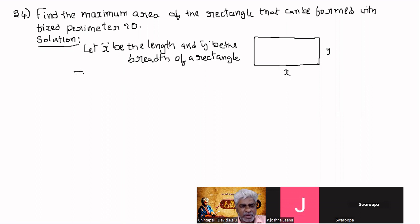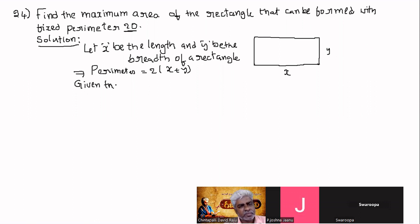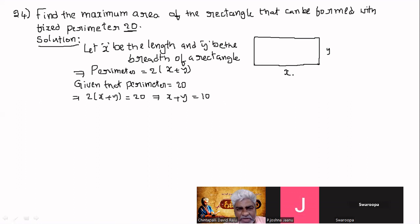Perimeter formula: 2 into L plus B, that is 2 into x plus y. Given that the perimeter is equal to 20. So 2 into x plus y is equal to 20, which gives x plus y is equal to 10.